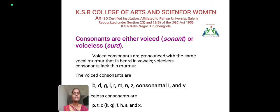Consonants are either voiced or voiceless. Voiced consonants are pronounced with the same vocal murmur that is heard in vowels. Voiceless consonants lack this murmur. The voiced consonants are B, D, G, L, R, M, N, Z, and also L, I, and V.